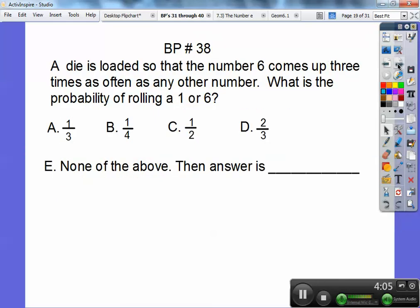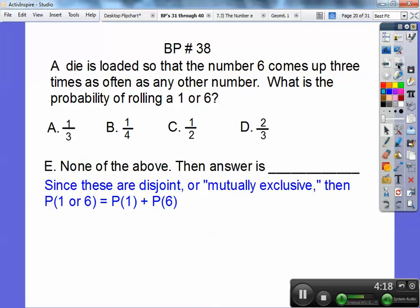A die is loaded so that the number 6 comes up three times as often as the others. So what's the probability of rolling a 1 or a 6? So I've got to figure out the probability of rolling a 1 or a 6. These are disjoint or mutually exclusive. So the probability of a 1 or a 6, you just add them up. Now mutually exclusive means I can't roll a 1 and a 6 at the same time. It means there's no intersection.